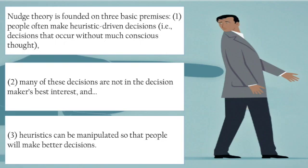Now I'm going to show a quick video on Richard Thaler, where he talks about how you can nudge people into making the right decisions — for example, steering them toward goods with positive externalities like healthy foods rather than demerit goods such as unhealthy foods.